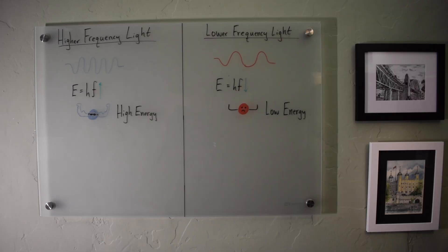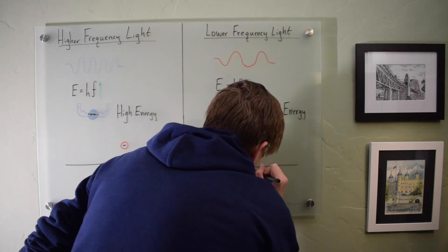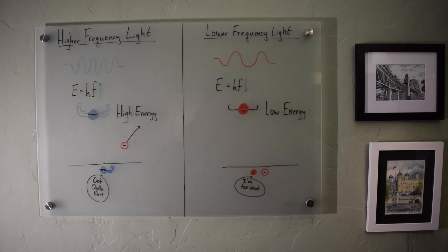This theory is a solution to this problem because higher frequency light would therefore have higher energy photons. These higher energy photons would then have the energy to eject individual electrons, unlike lower energy photons from lower frequency light.